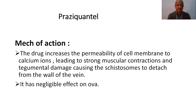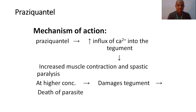Praziquantel has a negligible effect on ova. Remember this mechanism of action: it increases the permeability of the cell membrane, there is an increase of calcium ions, and due to the calcium ions, there are muscular contractions. That muscular contraction causes damage to the tegment, causing the schistosome to detach from the wall of the vein, resulting in the removal and finally death of the parasites. At high concentration, it directly damages the cell membrane, causing the death of the parasite.